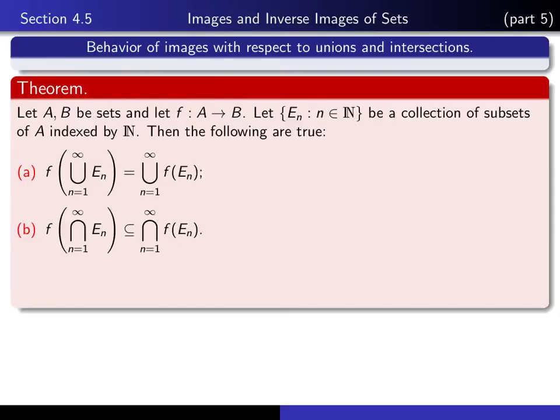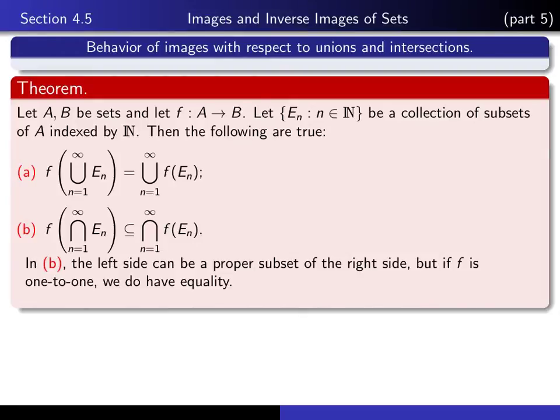This is the one that isn't so nice. It says that if you take the image of an intersection of sets, that that's contained in the intersection of all of the sets. And it's quite possible that the left-hand side is really a proper subset of the right-hand side.